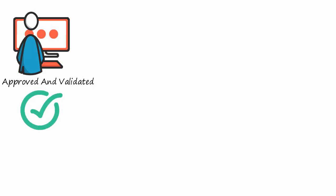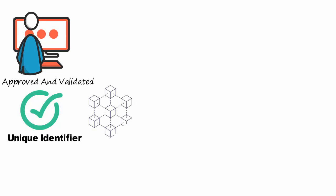In order for you to store information onto the blockchain, the information must first be approved and validated by all participants. Once the information is approved, a unique identifier known as the hash is produced. The hash is used to help users identify different blocks in the blockchain.